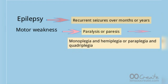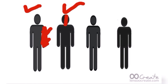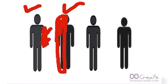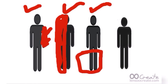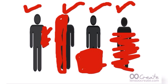On the whiteboard: in monoplegia, the problem is in one limb, marked here in red. In hemiplegia, one full half side of the body is affected. In paraplegia, there is weakness in both lower legs. In quadriplegia, there is weakness in both arms and both legs. This is the difference between all the plegias.